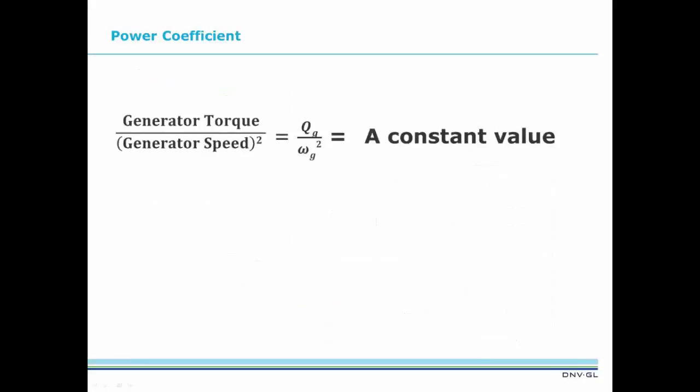To explain how this works, we first need to show that when the power coefficient is maximized, the ratio of generator torque to generator speed squared has a certain constant value. This constant value is called the optimal mode gain. So let's do the maths.